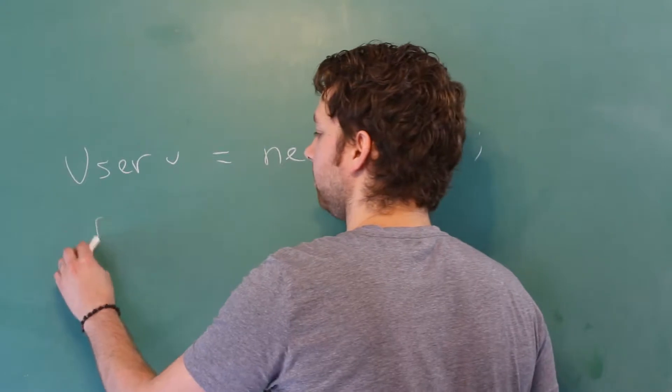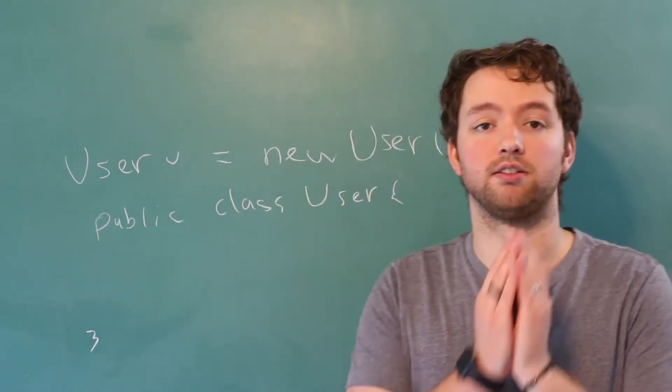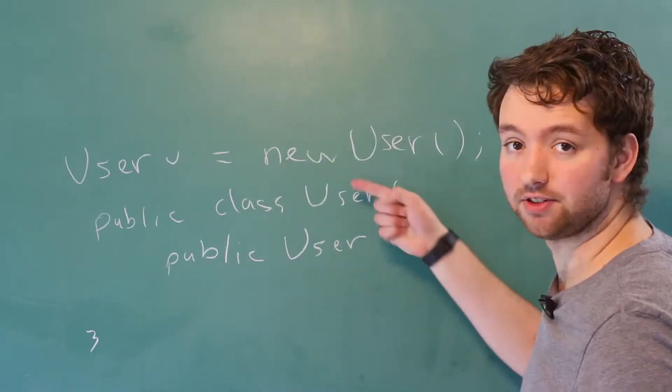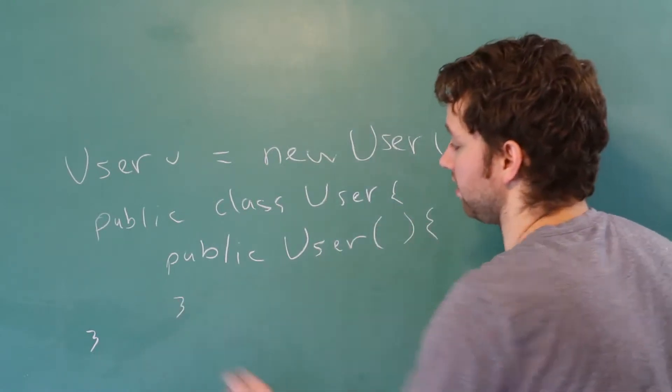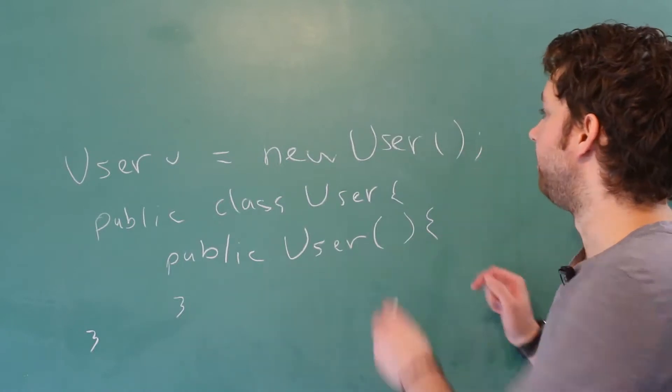So inside of our class, we define this constructor and another thing is it has no return or return type. So it's going to look like this: public user. Notice it matches the class name. Then we can have the parenthesis and the curly braces and we treat it just like any other method. Now this is what's known as the default constructor.